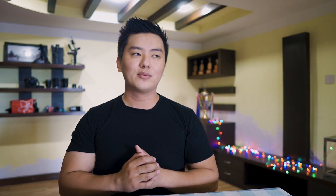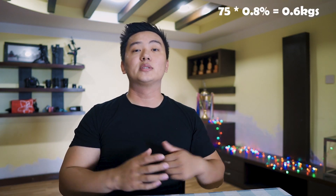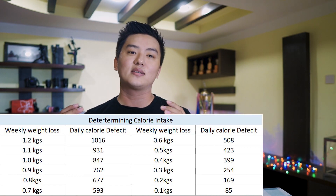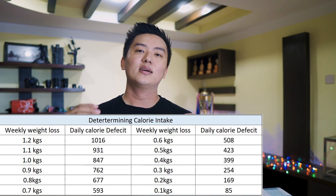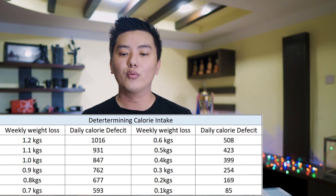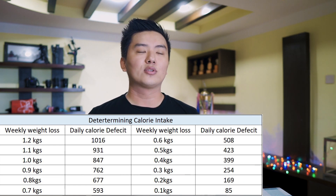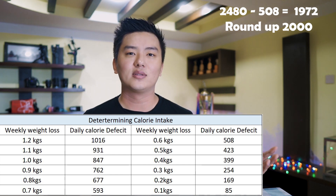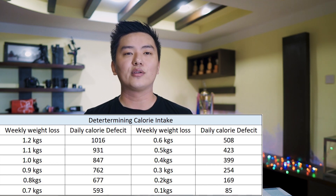Once we have our maintenance calories, we need to know how much of a deficit to create. In my case, I'm 75 kilos and I want to lose the most recommended amount, which is 0.8 percent per week — that's 0.6 kilos per week. According to the table I'm putting on screen, to lose 0.6 kilograms per week I need a deficit of 508 calories. My maintenance is 2480, so subtracting roughly 500 gives me about 2000 calories per day.